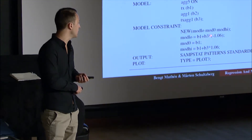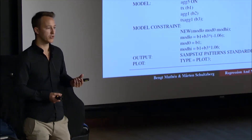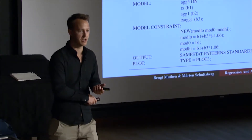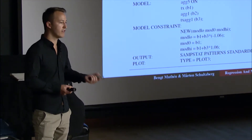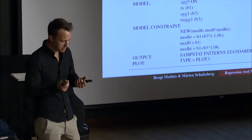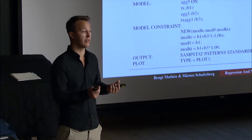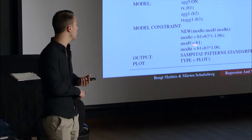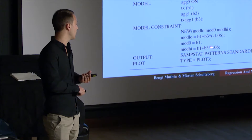These use the moderator function: beta1 plus beta3 times a value. For mod_low, the value is minus 1.06 — one standard deviation of the ag1 variable, so one standard deviation below the mean. For mod_zero, it's the treatment effect when baseline aggression is at zero, which is the mean because we centered the variable — so ag1 has mean zero. For mod_high, it's one standard deviation above the mean.